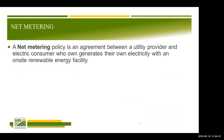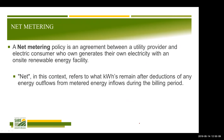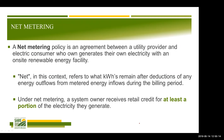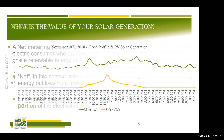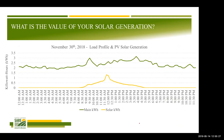Net metering is a policy or rule usually put in place by a state or utility that allows the customer-generator to value some of that excess generation at full retail rate, by using only the net excess generation to calculate how much kilowatt-hour use there is in a billing period. Here is a farm where the green area shows kilowatt-hour usage during a single day and the yellow shows the solar kilowatt-hour generation during that same day.